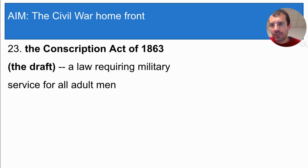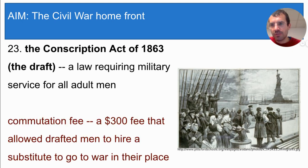Another thing that happened to civilians during the Civil War was that some of them were forced to fight even if they didn't want to. In 1863, Congress passed the Conscription Act, also known as the Draft. This was a law that required military service for all adult men. The draft means that certain people are selected to go to war, and if they're selected, they have no choice but to go. During the Civil War, the draft applied to men between the ages of 20 and 45. However, wealthy men who were drafted could pay what was called a commutation fee of $300 to hire a substitute, meaning someone else — usually a poor person — would serve in the military in their place. The commutation fees angered poor northerners, who complained that the Civil War was, quote, a rich man's war and a poor man's fight.